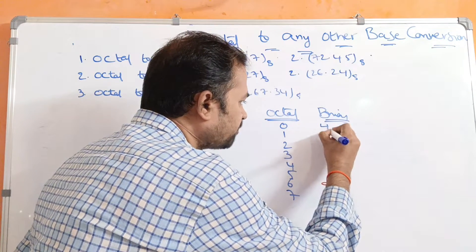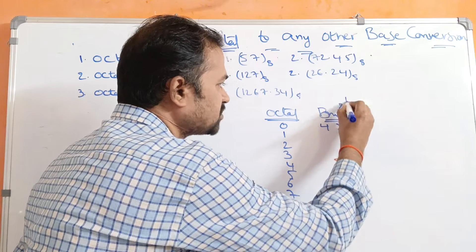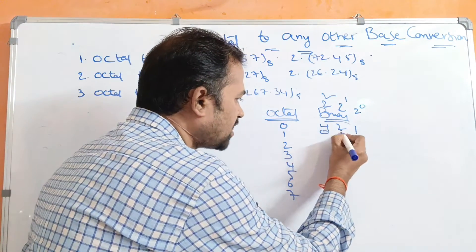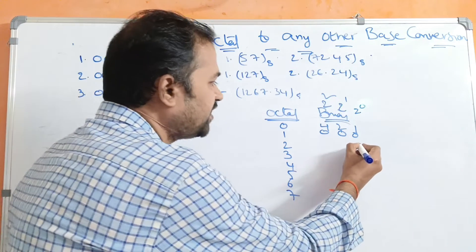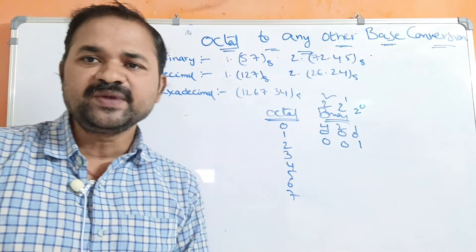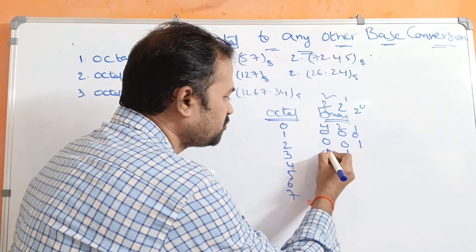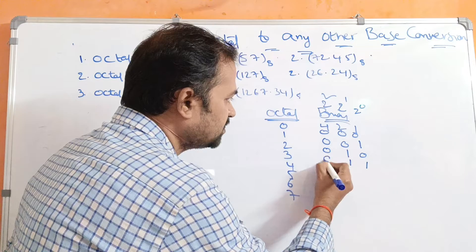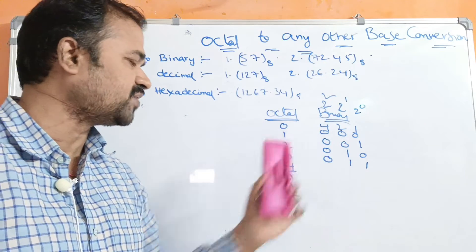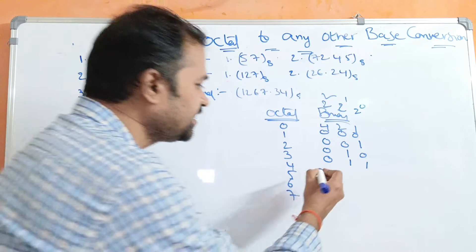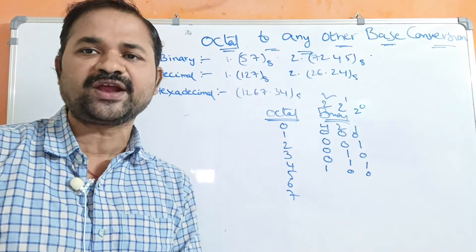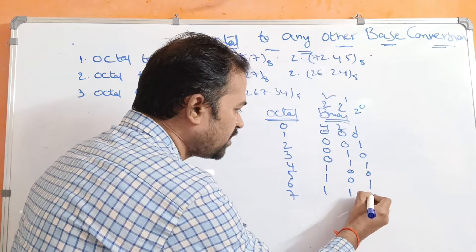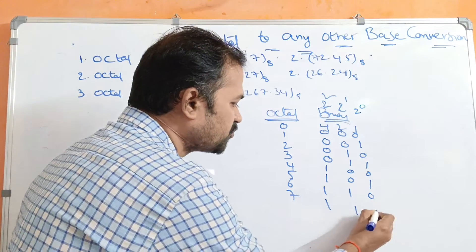In octal we use a 4-2-1 notation, where 1 means 2 power 0, 2 means 2 power 1, and 4 means 2 squared. So 0 means all 0s. 1 means place 1 in the 1-position, remaining 0s. 2 means place 1 in the 2-position, remaining 0. 3 is the sum of 2 and 1, so place 1 in the 2 and 1 positions, 0 in the 4-position. 4 means place 1 in the 4-position, remaining 0s. 5 is sum of 4 and 1: place 1 in 4 and 1 positions, 0 in 2-position. 6 is sum of 4 and 2: place 1 in 4 and 2 positions, 0 in 1-position. 7 is sum of 4, 2 and 1, so all 1s.